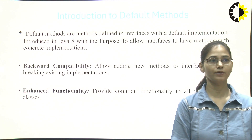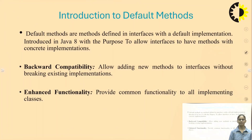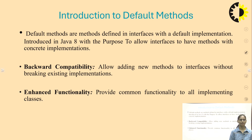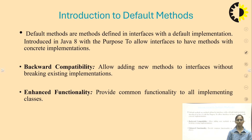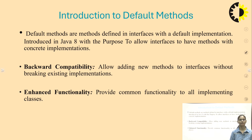Default methods are introduced in Java 8. Before this, methods inside an interface could only be declared — no definition was provided. With the help of the default keyword, a default method can be declared and defined. This provides backward compatibility, allowing new methods to be added to interfaces without breaking existing implementations.